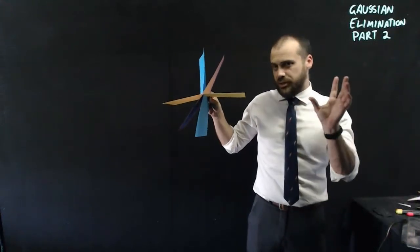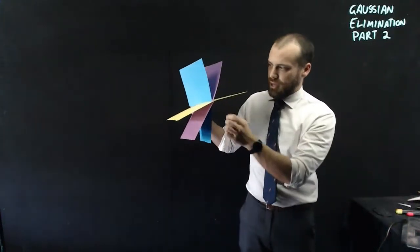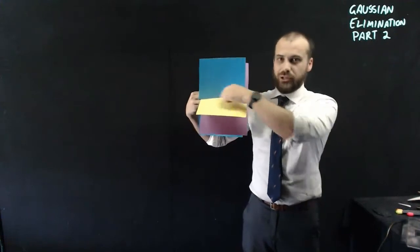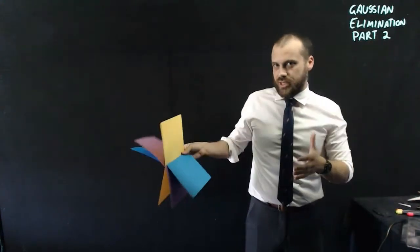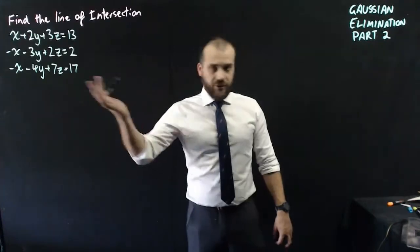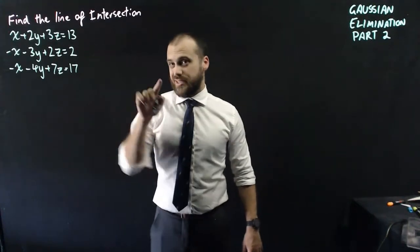So, in this one we're going to be doing Gaussian elimination again, but we're going to have three planes that meet and align, not at a point. And you're going to see what that looks like when we get to the end of this Gaussian elimination. So I'm going to find the line where these three planes intersect.